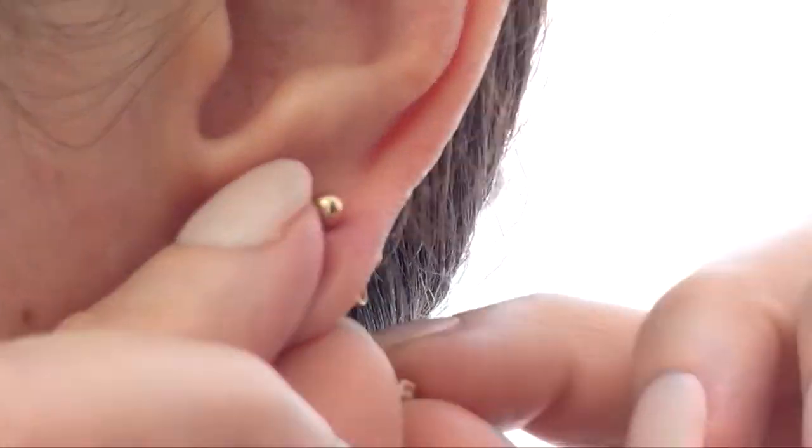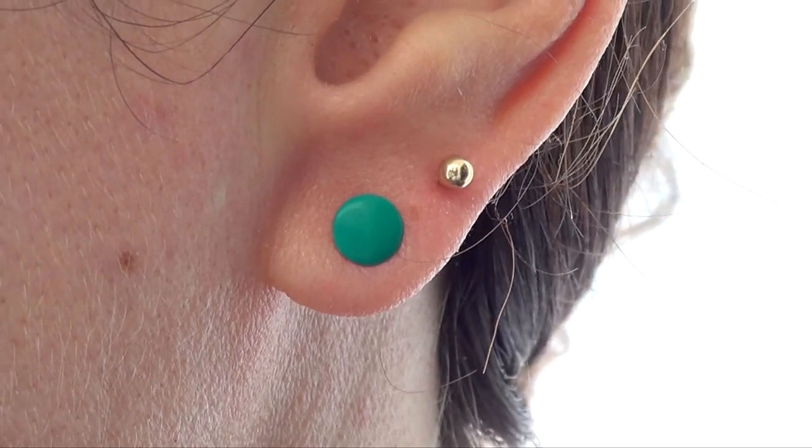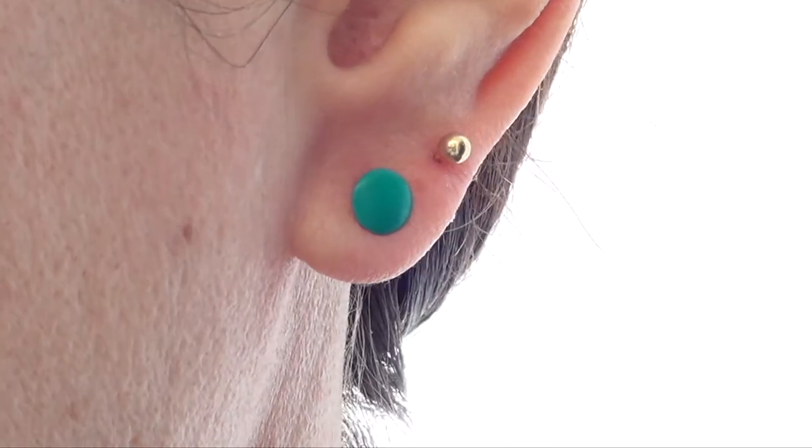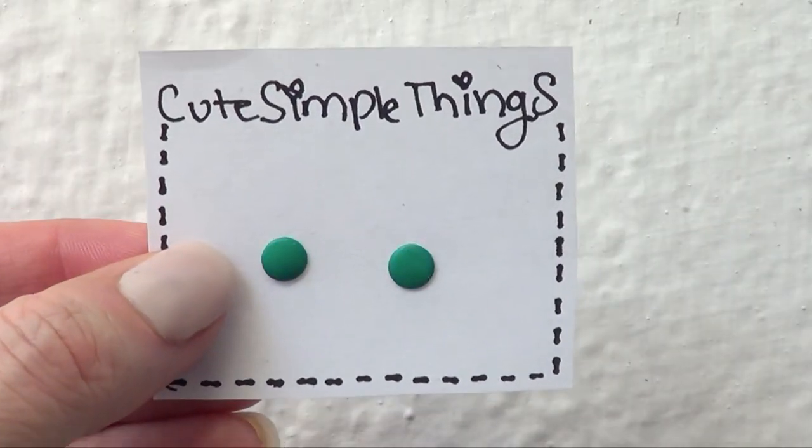I just went with teal because as you can see, I have another earring, a tiny one right there that is gold. And I love the combination of gold and teal, it's one of my faves. But if you need confetti earrings, as I call them, in another shade, anything that you need is the same process.